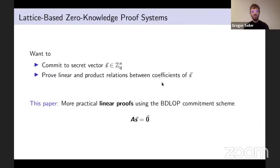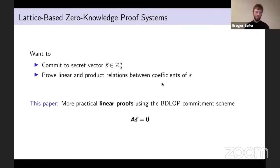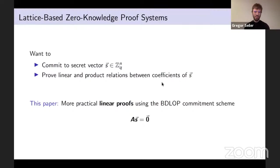In such a proof system, the thing one wants to do is to be able to commit to some secret vector S and then prove linear and product relations about the coefficients of S. In this paper in particular, we show how to prove linear equations using the BDLOP commitment scheme — for example, a simple equation like the one on the slide.